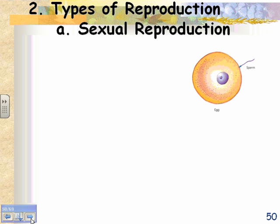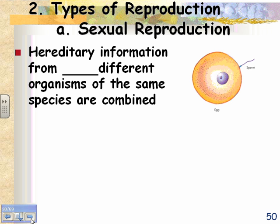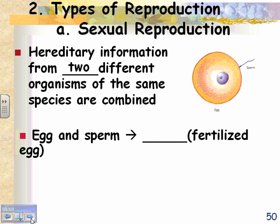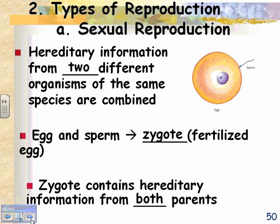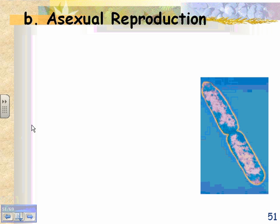There are two types of reproduction: sexual reproduction and asexual reproduction. In sexual reproduction, you have two parents and the babies are different from the parents. Hereditary information from two different organisms of the same species is combined. An egg and a sperm unite and form a zygote — a fertilized egg. A zygote contains hereditary information from both parents.